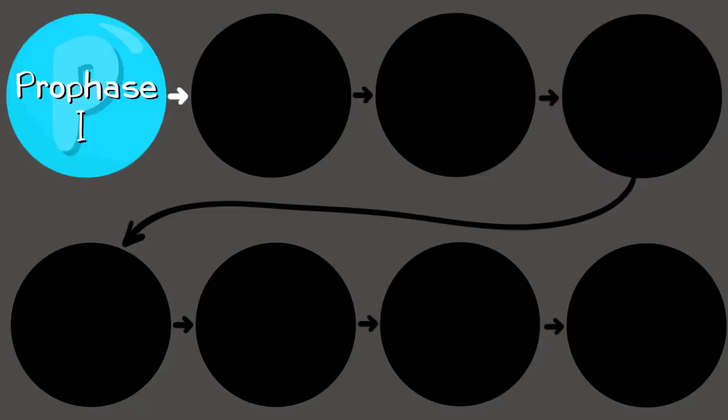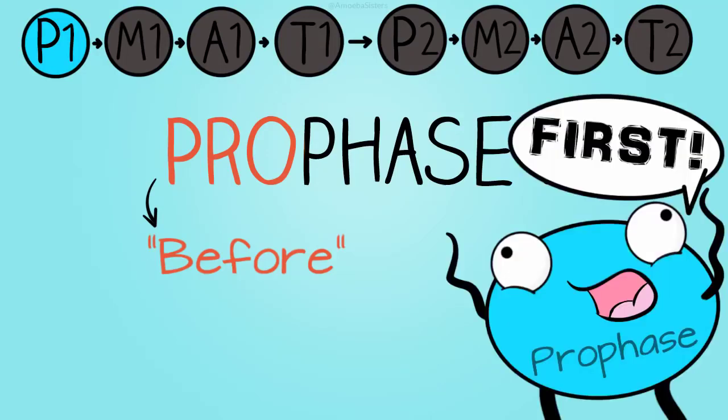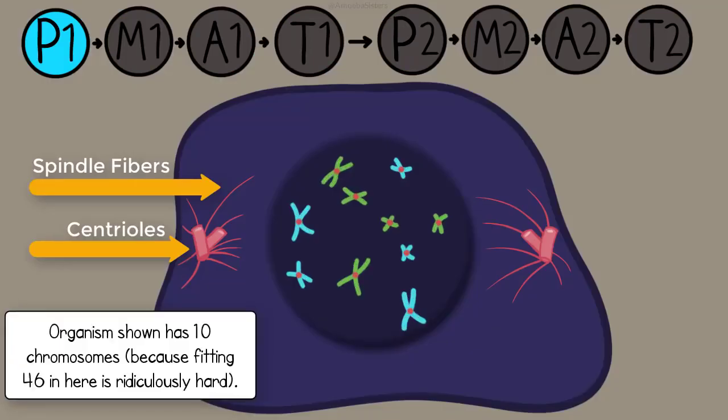So let's start with the very first step, prophase one. One thing I like to remember about prophase is pro. This actually means before, and it kind of helps you remember that it comes before all the other stages start. This is where the chromosomes are going to condense and thicken.